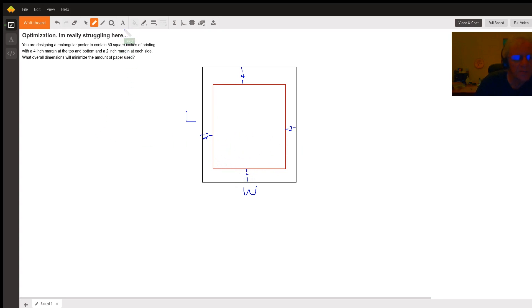What we'd like to do is come up with a function that looks probably something like this: A equals LW, and A is what we want to minimize, the amount of paper used.